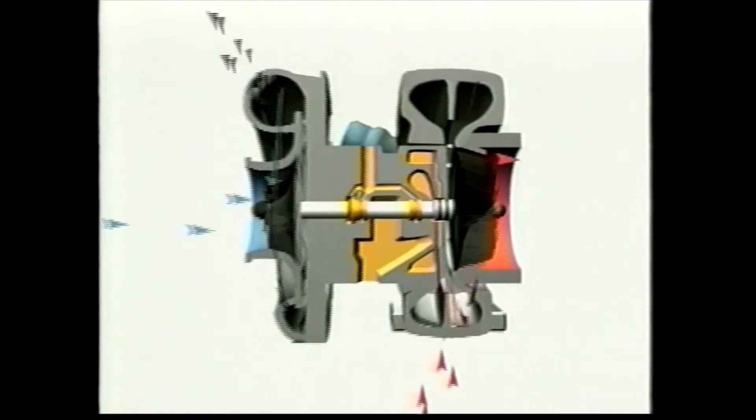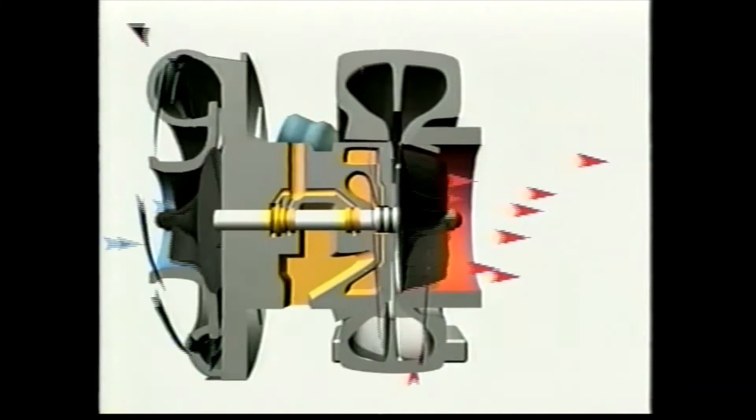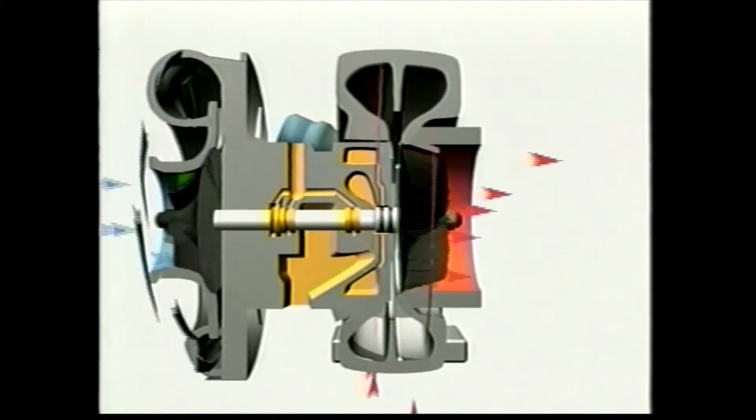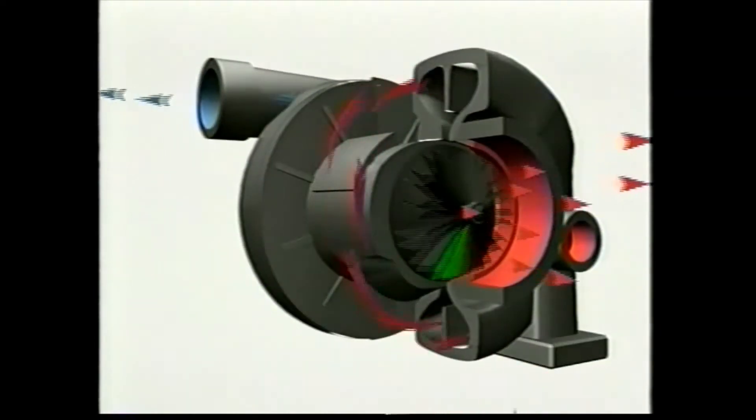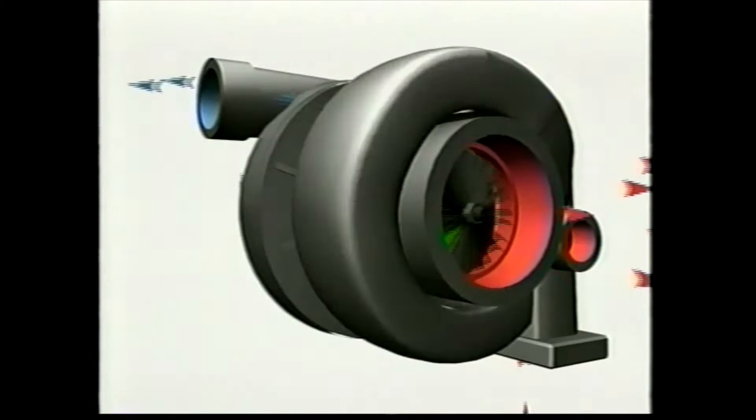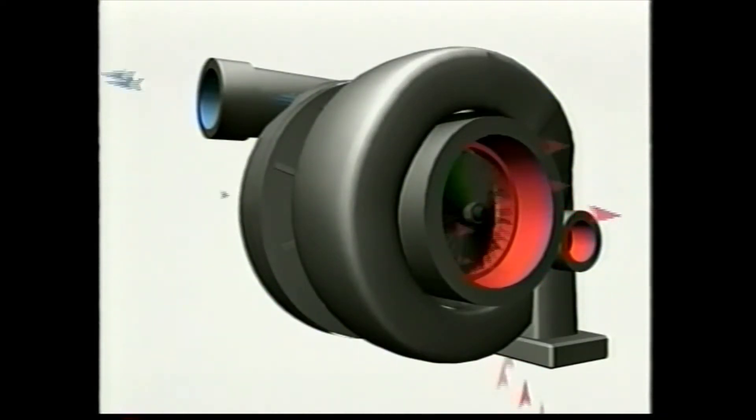The suction created from the spinning compressor wheel pulls ambient air through the air filter. It is then compressed and forced into the charge air cooler, where it is cooled before entering the combustion chamber. When mixed with precise amounts of fuel, this cool, high-pressure air charge in the combustion chamber maximizes power output.